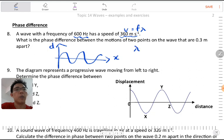So that's 360 divided by 600. Then you should get 0.6 meter. Alright, so we know that now in between two identical points is 0.6 meter.